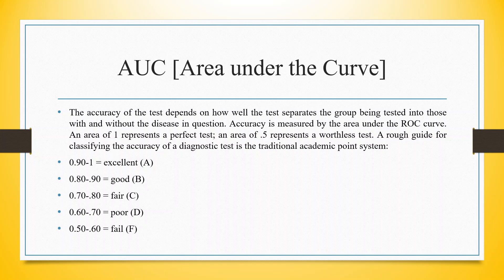What is our interpretation of area under the curve? The accuracy of any test depends on how well the test separates the group being tested into those with and without the disease. Accuracy is measured by the area under the ROC curve. An area of 1 represents a perfect test. As a rough guide: 0.9 to 1 is excellent, 0.80 to 0.90 is good, 0.70 to 0.80 is fair, 0.60 to 0.70 is poor, and 0.50 to 0.60 means the model is not working properly — it has failed.